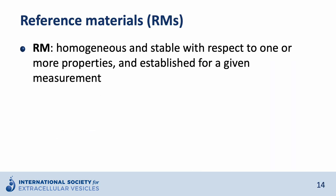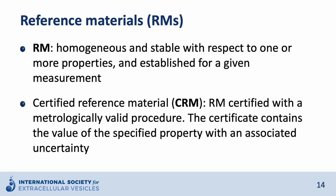The last term I would like to introduce is the reference material. A reference material is homogeneous and stable with respect to one or more properties and established for a given measurement. Different levels of reference materials exist. For example, there are certified reference materials, or CRMs. These CRMs are certified with a methodologically valid procedure, and the certificate contains the value of the specified property with an associated uncertainty. CRMs represent the highest level of reference material.